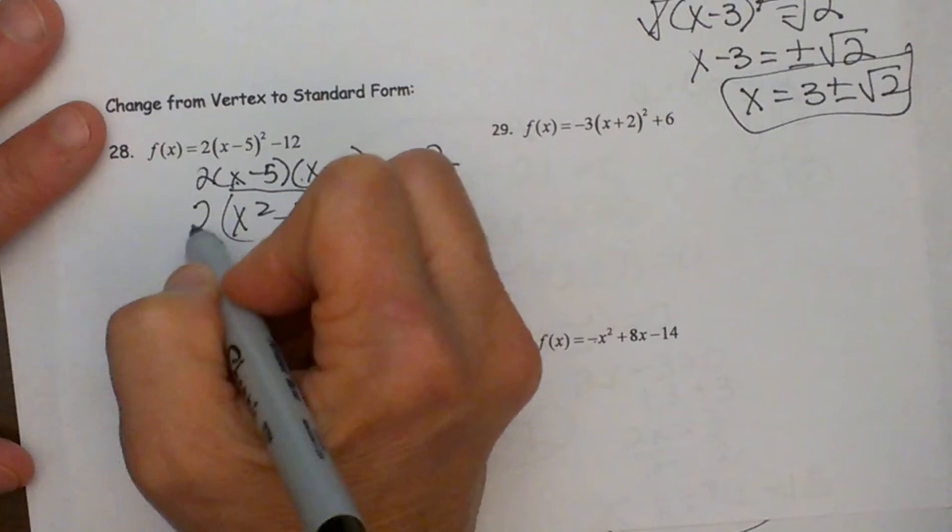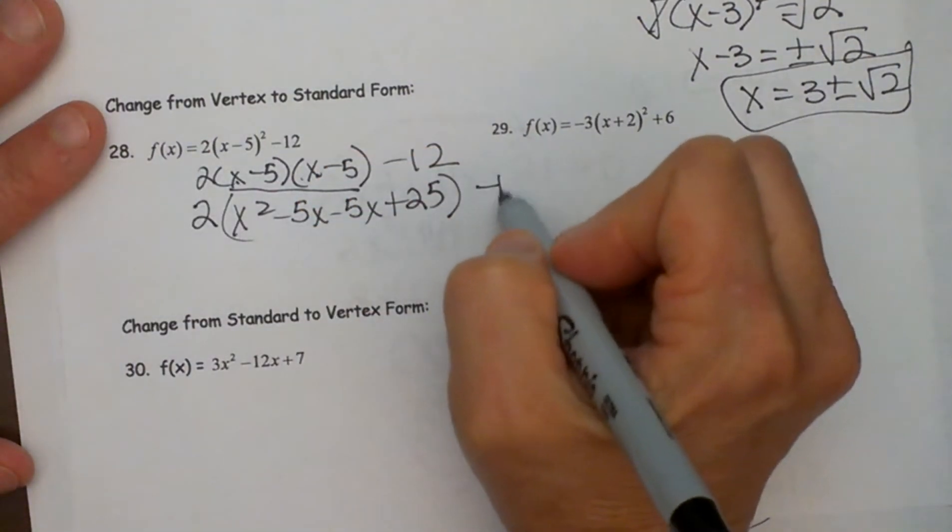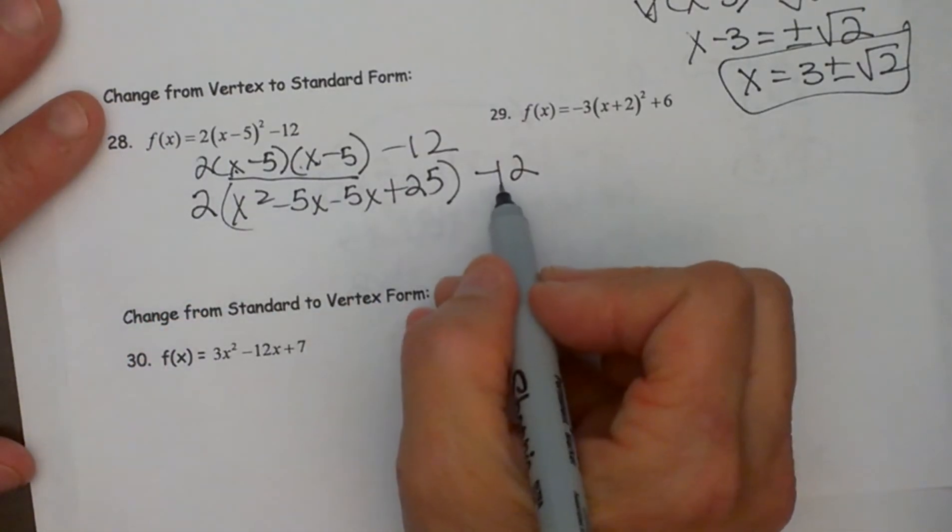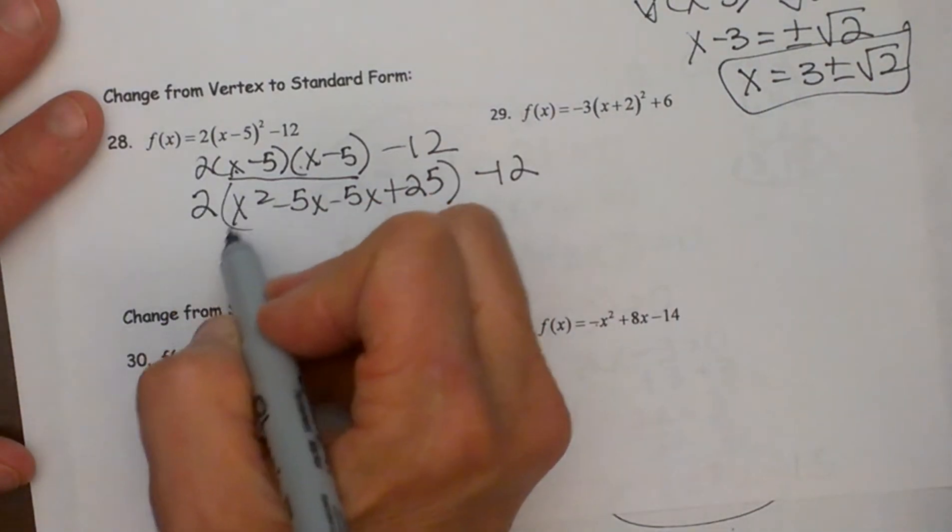All in parenthesis because I have a coefficient 2 I have to deal with. Now by order of operations I am going to distribute that 2 in next. So let's distribute the 2.